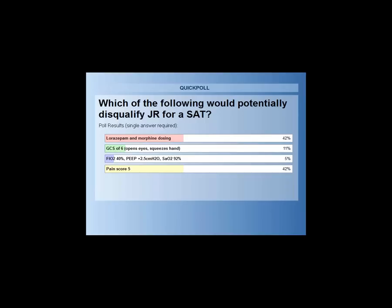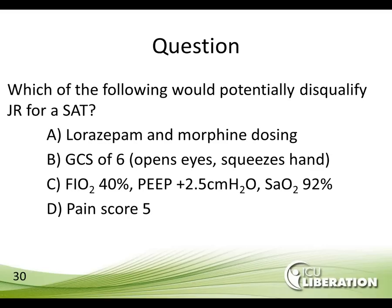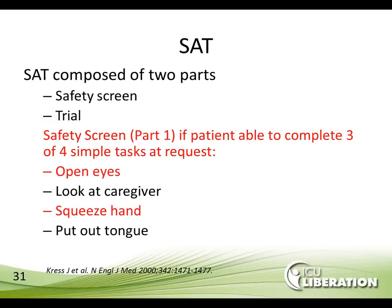Results: lorazepam and morphine dosing — 42%; pain score of 5 — 42%; ventilator settings — 5%; GCS score — 11%. Let's look at this in detail. The optimum answer is the GCS of 6. The patient only opens his eyes and squeezes his hands. Lorazepam and morphine dosing doesn't affect eligibility because we monitor based on sedation scores. The FiO2 of 40%, PEEP 2.5, and SAO2 are actually well within acceptable parameters. Pain score does not disqualify him per the literature.